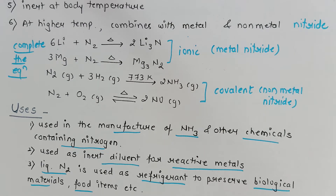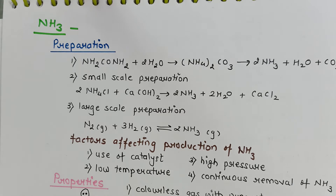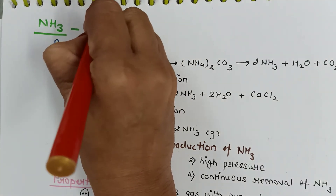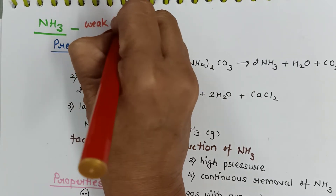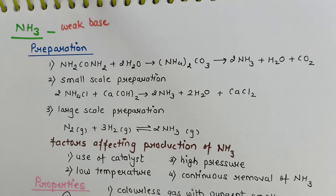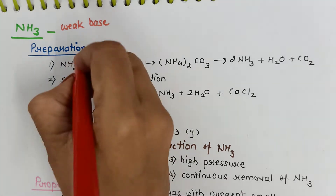Now we'll discuss compounds of nitrogen, first of all ammonia (NH3). We all know it is a weak base. There are various methods for its preparation. The first method is by decomposition of urea.